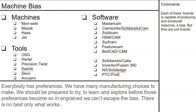Everybody has preferences. When I say bias, we have our preferences — our prejudices, in effect. It comes with machines. I learned on Haas, but I've tried not to shy away from learning the Heian CNC router, the Weki CNC router, the Miltronics — anything that's been put in front of me. I spend a week or two with it and learn its capabilities.